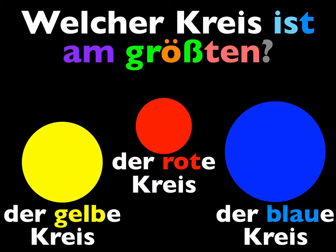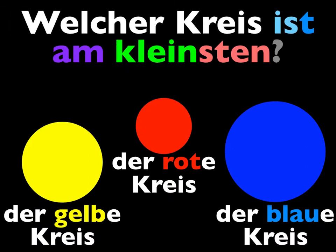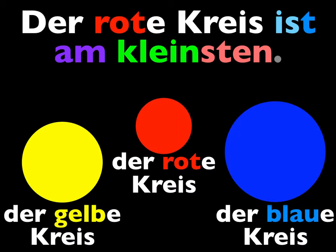Well, hopefully you got it right. You should have said: Der blaue Kreis ist am größten. The blue circle is the biggest. Let's continue. Welcher Kreis ist am kleinsten? Der gelbe Kreis, der rote Kreis? Der rote Kreis ist am kleinsten.